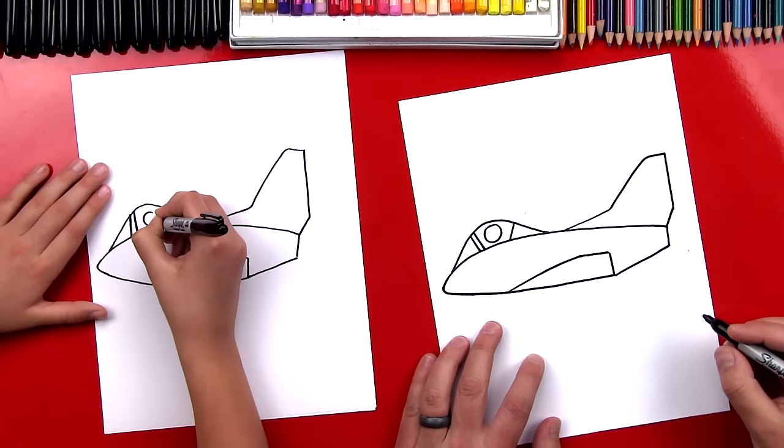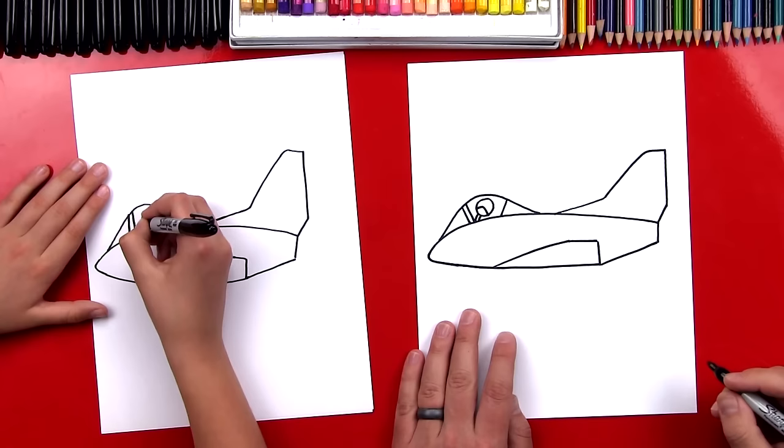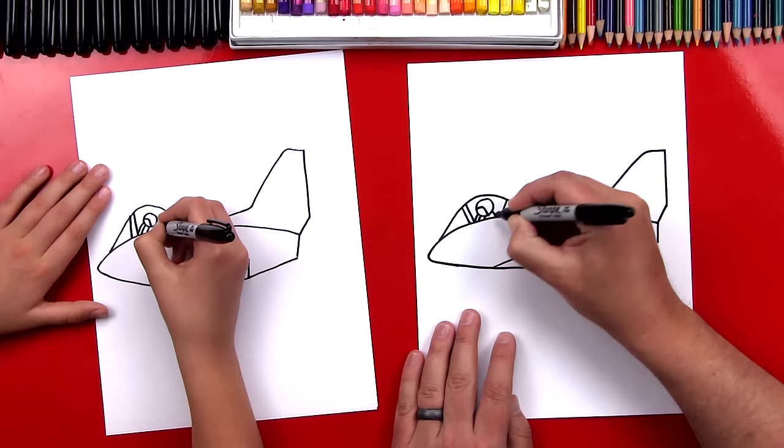Yes. And then let's draw his visor and his mask, so a little like that. And then he's got his oxygen coming up to his mask. Oh, and then we need to draw his body, right? Yeah. So let's draw two lines that connect to his helmet.